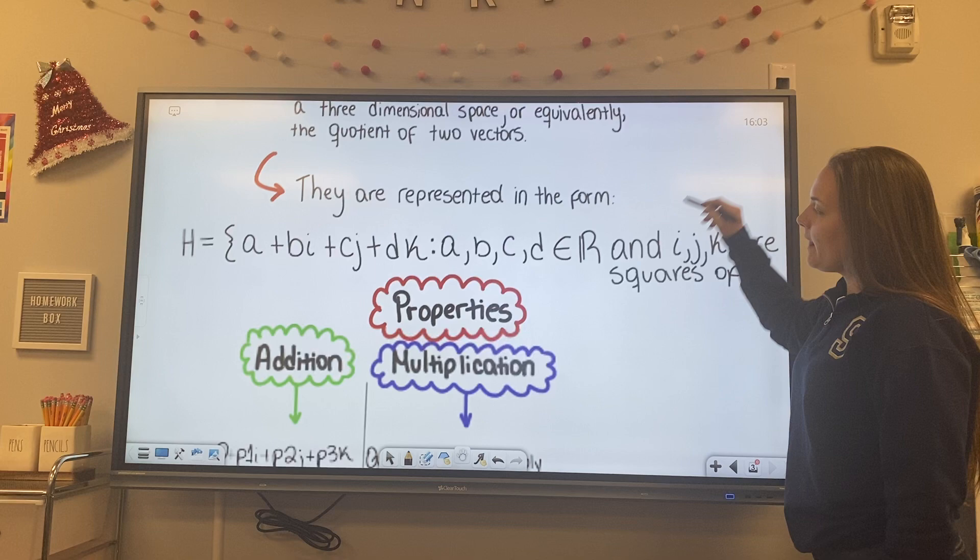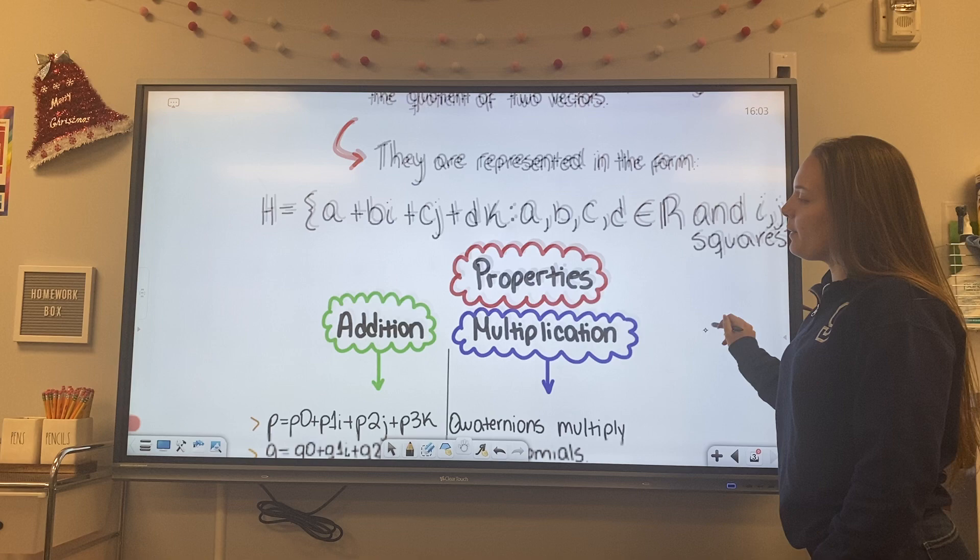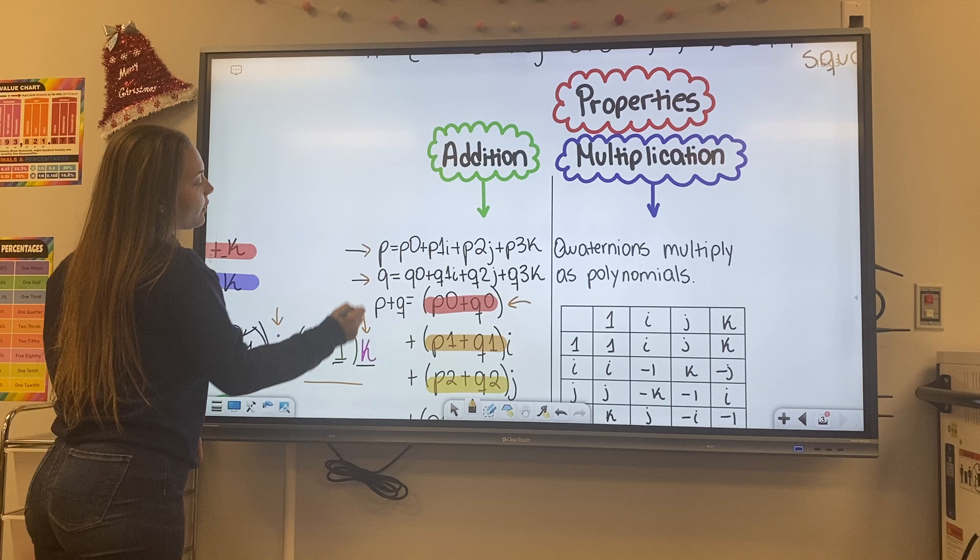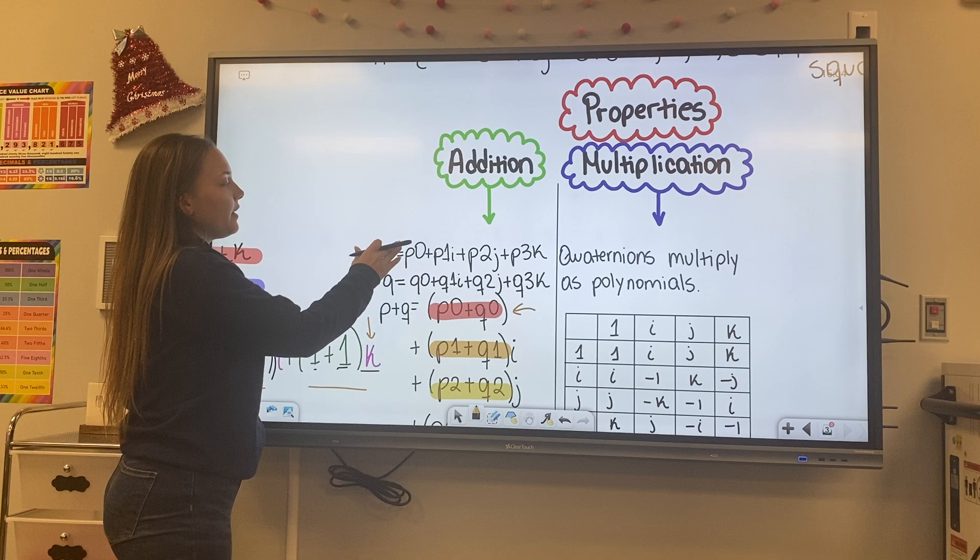So let's look at some properties. Today we're going to talk about the property of addition and multiplication. Let's start with addition. So here you can see how we have two Quaternions and anytime that we're going to add two Quaternions, we're going to focus on the components.